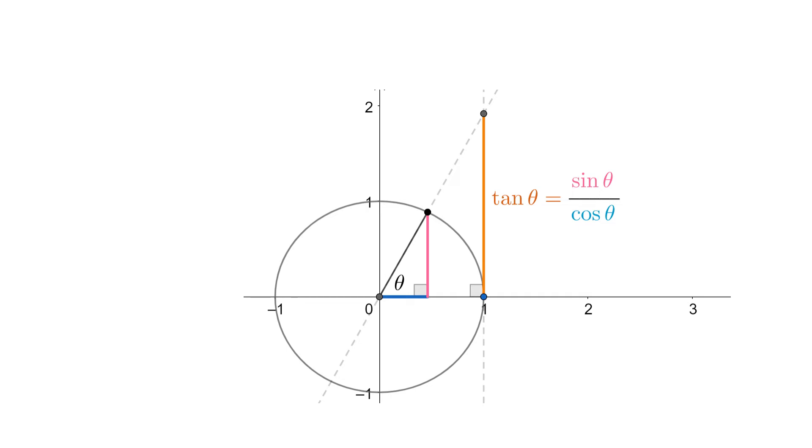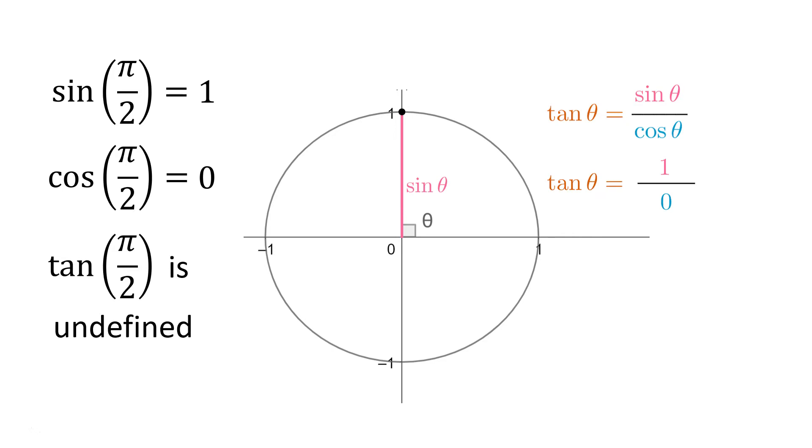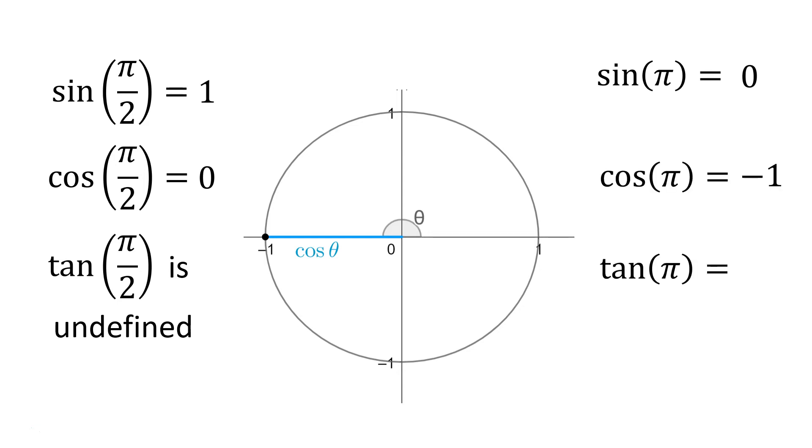So if we move our angle around to 90 degrees, or pi on 2, we can see the sine is 1. The cosine is 0, can you see the x value shrinking to 0 there? And the tan is sine divided by cosine, well that would be 1 divided by 0, but we call that undefined. And if we look at 180 or pi, the sine, the y value shrinks to 0, the cosine or the x value is negative, negative 1, and the tan is 0 divided by negative 1, well that's still just 0.